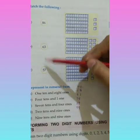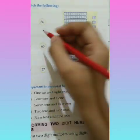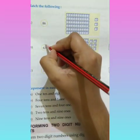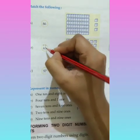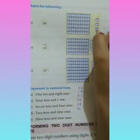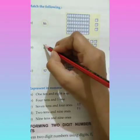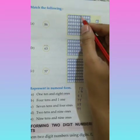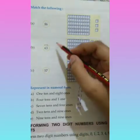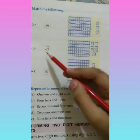That means, the number will be 63. If you have any confusion, write T, O above the number. 3 ones, 6 tens. 1, 2, 3, 4, 5, 6. That means, we have to match this one with 63.